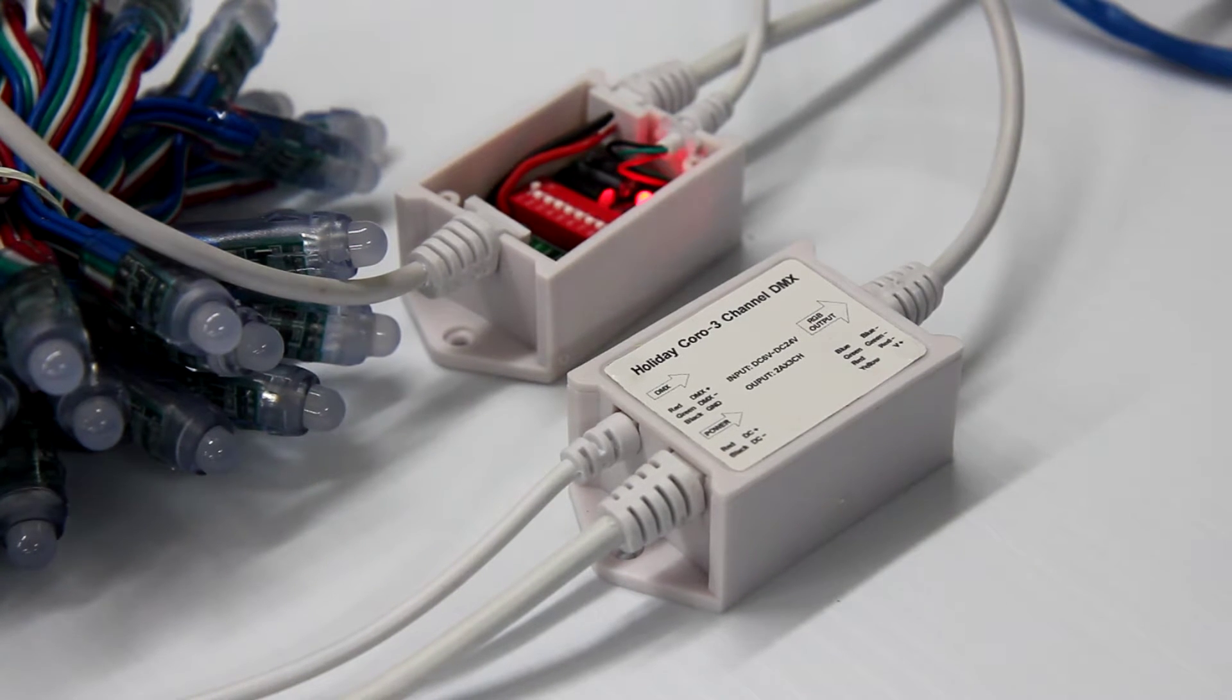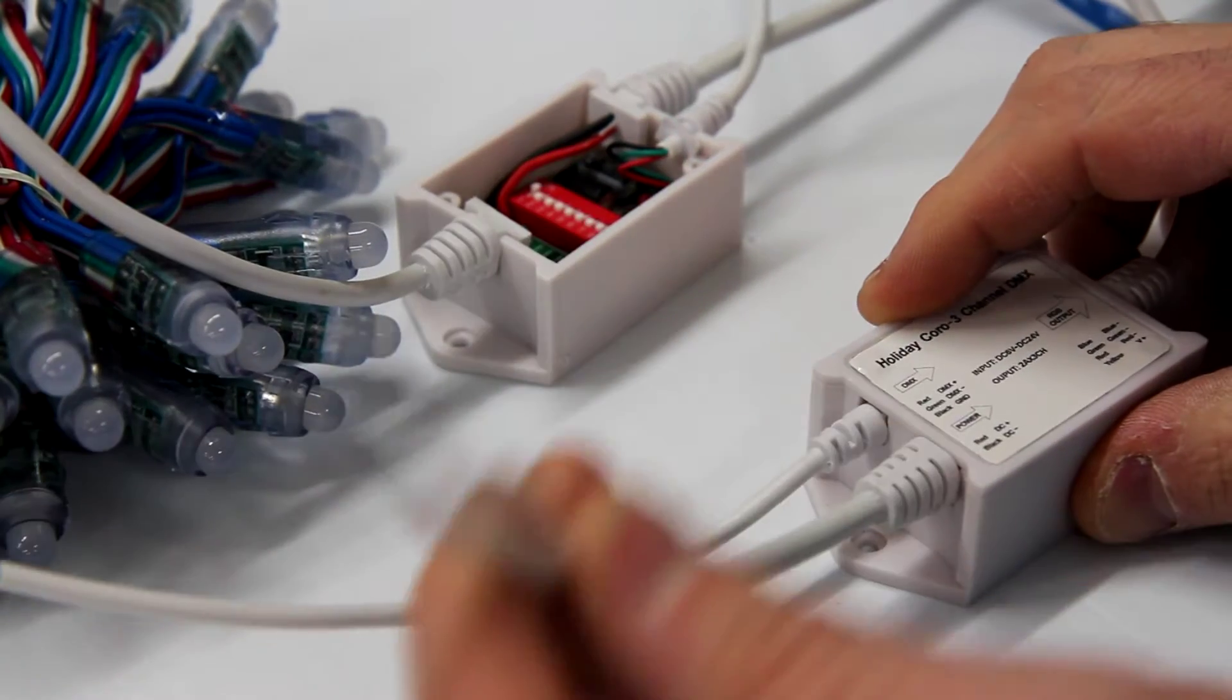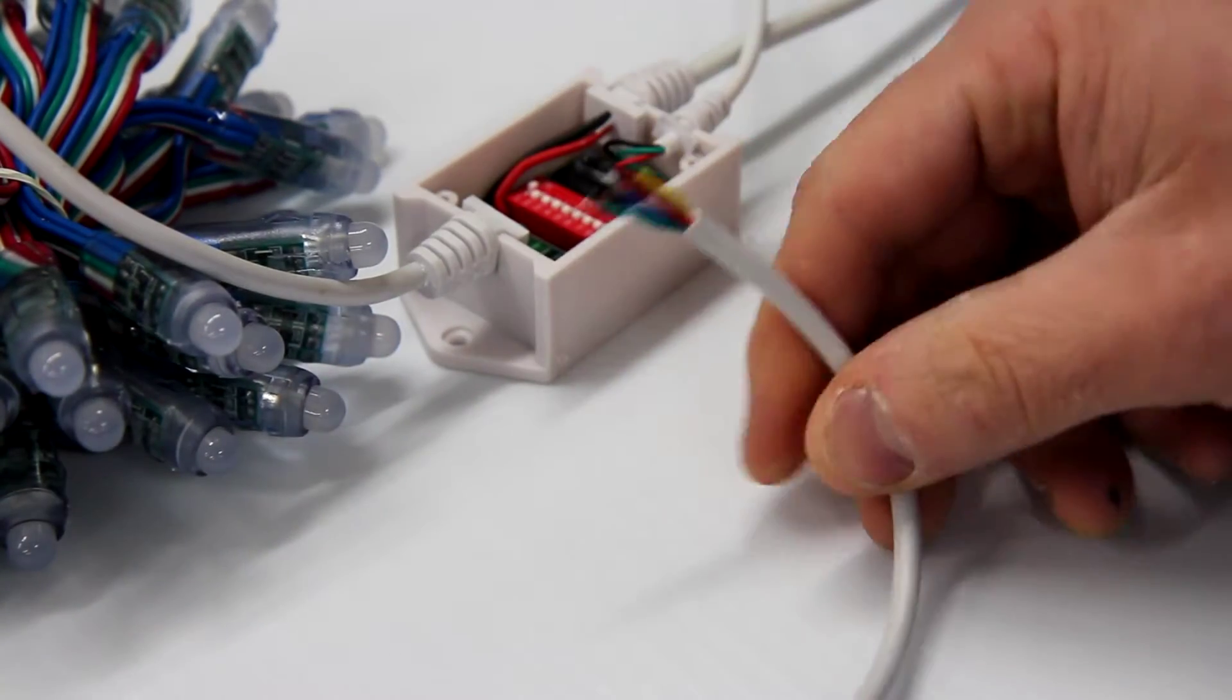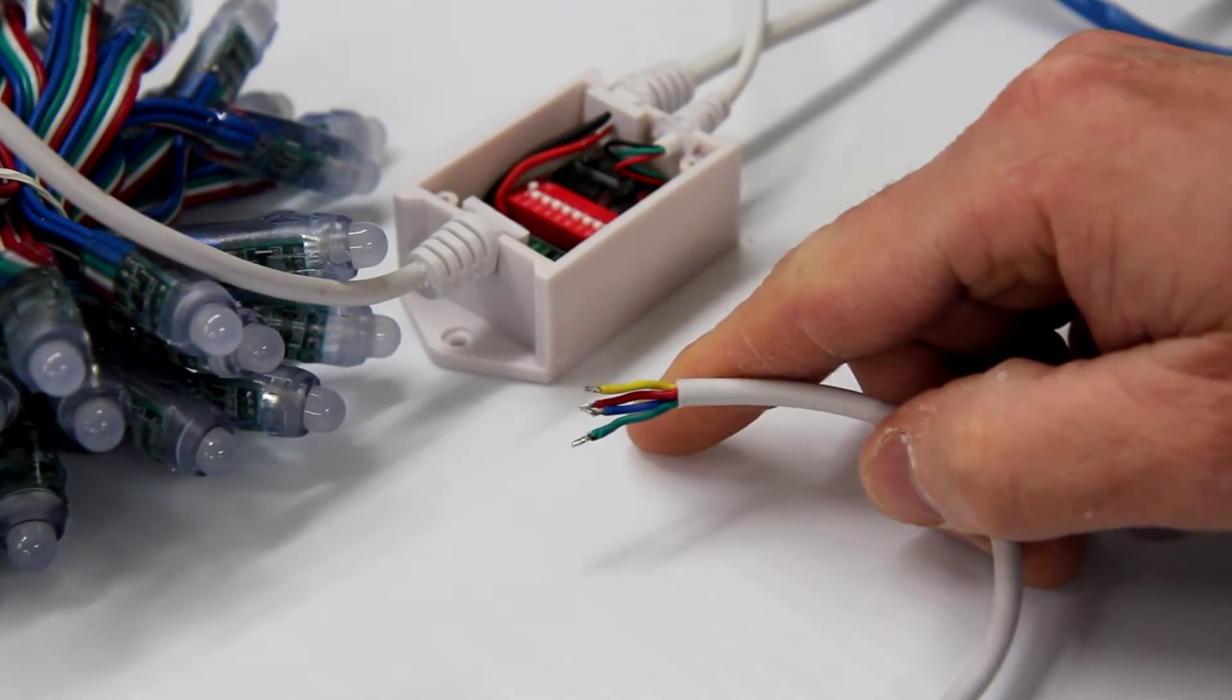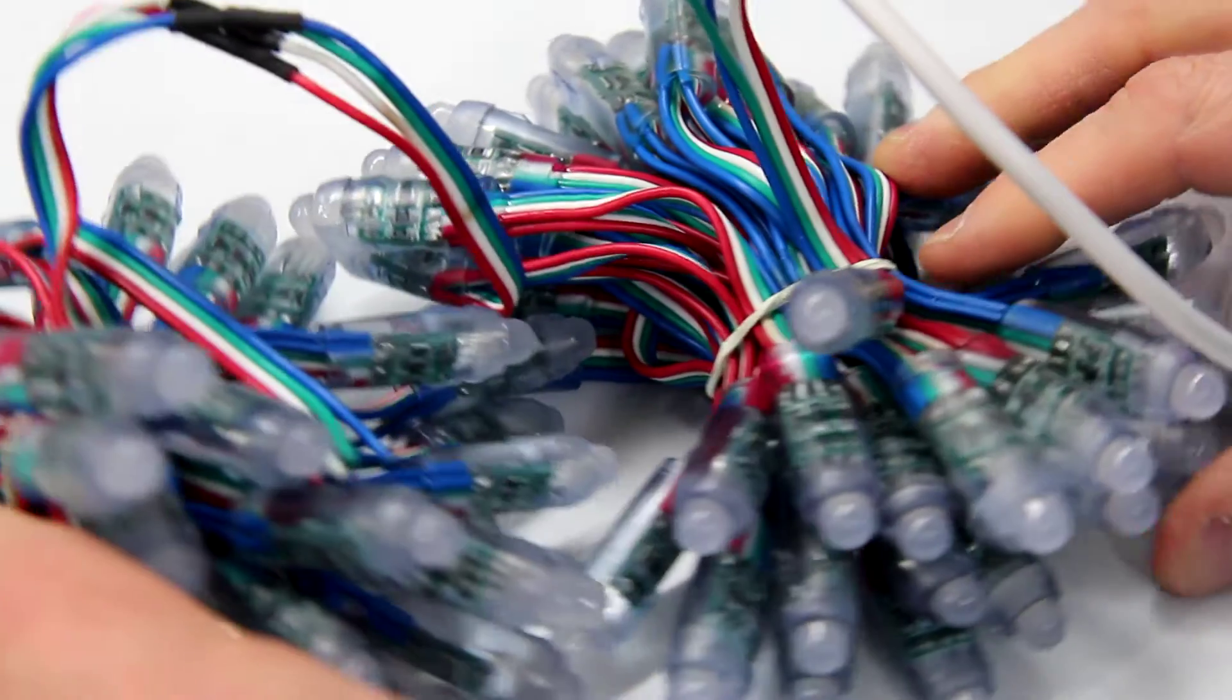This controller takes data on this data line here and power, and then outputs a DUMM RGB PWM signal on these four wires. In this particular case, you can see that we have it hooked up to 100 RGB nodes.